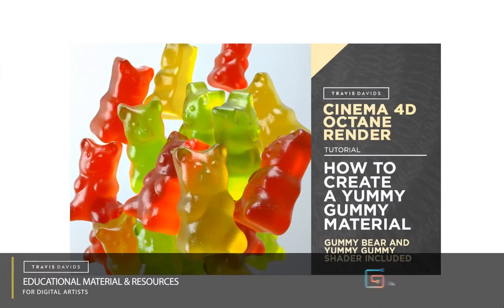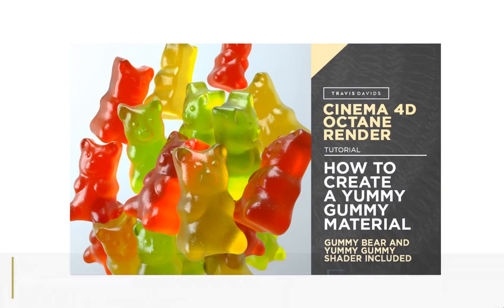In today's tutorial I'm going to be showing you how to create this delicious yummy gummy material. It's supposed to look like gelatin because that's one of the main ingredients for actually creating a gummy bear. This material is going to work best with this particular object — check the description for a link to the gummy bear I created with ZBrush, and there's a normal map included which creates surface imperfection that adds to the realism.